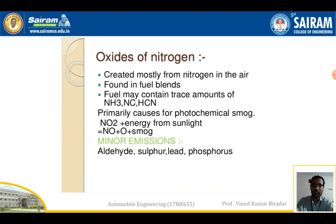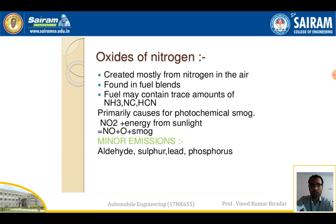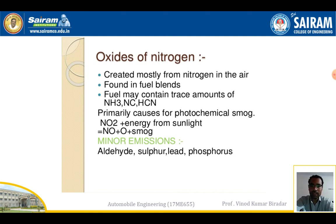Oxide of nitrogen (NOx) is caused mostly by nitrogen in the air, and also found in the fuel blend. Fuel may contain trace amounts of ammonia (NH3) and HCN. A primary cause of photochemical smog is NOx: nitrogen oxide plus energy from sunlight produces nitrogen, oxygen, and smog. Minor emissions include aldehydes, sulfur, lead, and phosphorus.